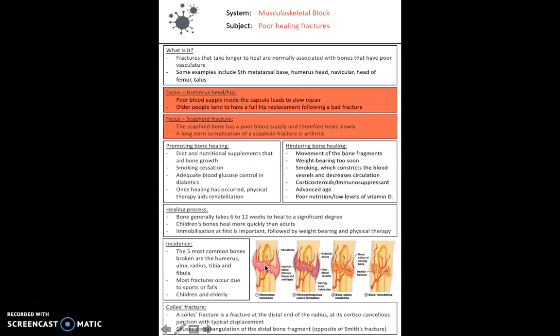This diagram here shows what happens about the hematoma formation and how this gradually becomes a bony callus to bridge the gap between the two bone ends that are fractured. A Colles fracture, just to be aware, is a fracture at the distal end of the radius. It's quite a common fracture and important to be aware of. It's the opposite of a Smith's fracture.